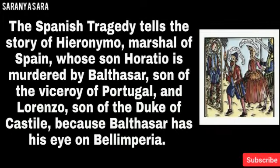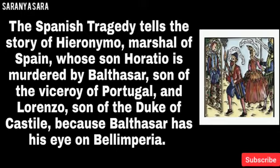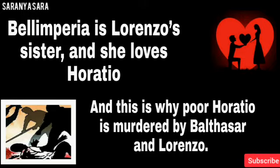The Spanish Tragedy tells the story of Hieronymus, Marshal of Spain, whose son Horatio is murdered by Balthasar, son of the Viceroy of Portugal, and Lorenzo, son of the Duke of Castile, because Balthasar has his eye on Belimperia. Belimperia is Lorenzo's sister and she loves Horatio, and this is why poor Horatio is murdered by Balthasar and Lorenzo.